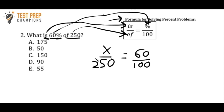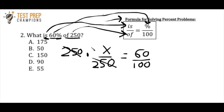So the way we do this, we're just going to do some basic algebra. We have x divided by 250, so to get x by itself we do the opposite of division, which is multiplication. We multiply both sides by 250 — the 250s cancel out, leaving just x. Whatever you do to one side, you also have to do to the other. So: 60 times 250 divided by 100, and the answer is 150.